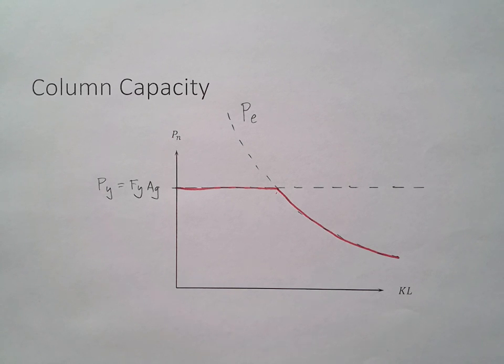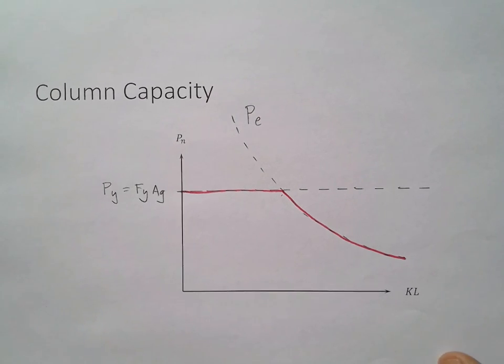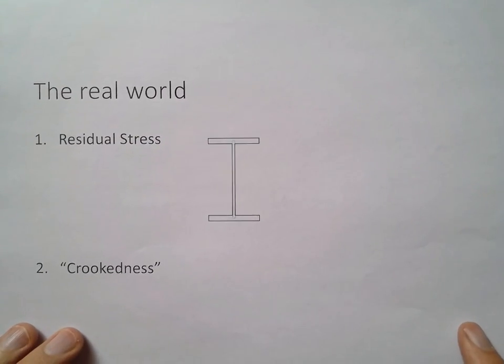Unfortunately, this is due to ideal conditions. We assume ideal conditions. But there are a couple of things that we have to account for when we're using the code equations. There's a couple of things that happen in the real world.